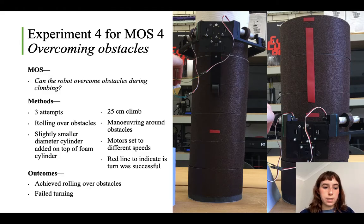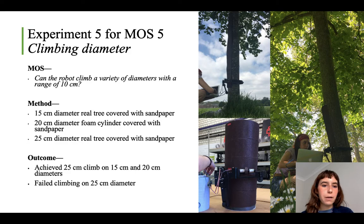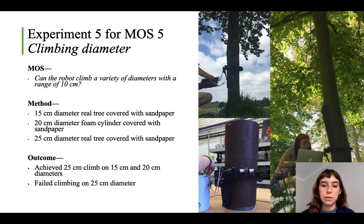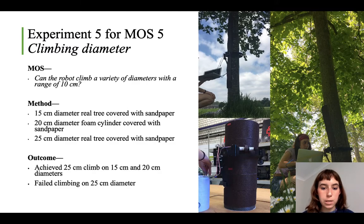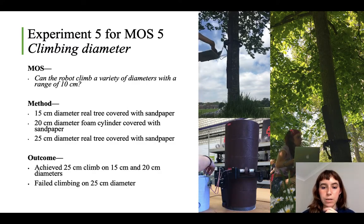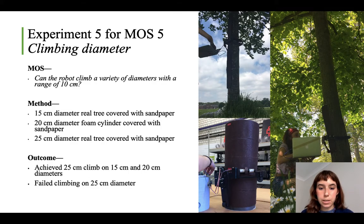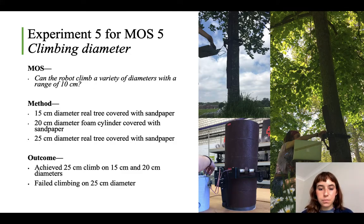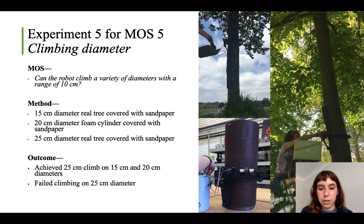Experiment five tested MOS5: can the robot climb a variety of diameters within a range of 10 centimeters? It successfully climbed the 15-centimeter real tree and the 20-centimeter diameter cylinder. However, the 25-centimeter real tree was not achieved — it was difficult to tell whether this was due to tree irregularities or because the servo motors were coming into contact with the tree and causing friction. Given more time, I would have made a foam cylinder at 25 centimeters to test on a smooth surface.